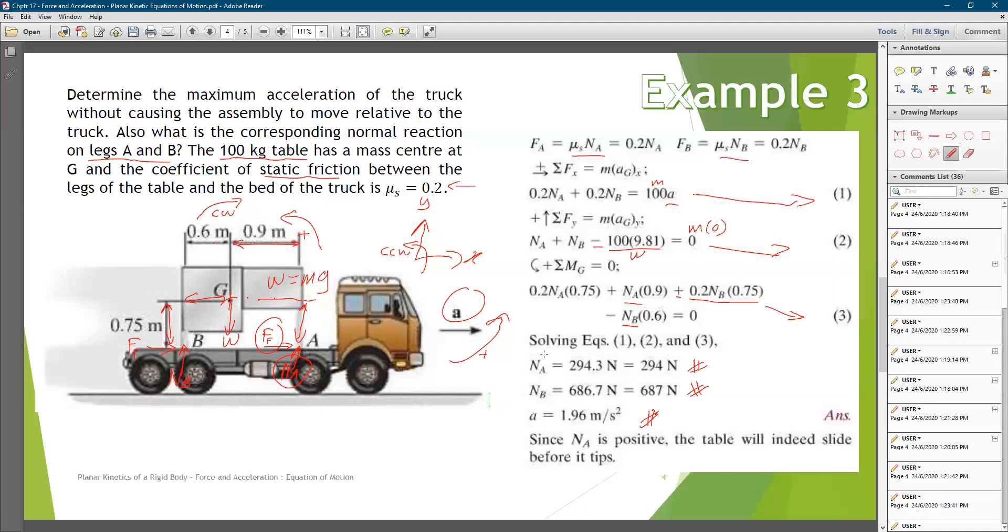And if you look from this point here, since N_A is positive, the table will indeed slide before it tips.